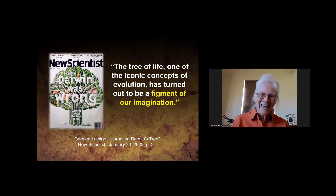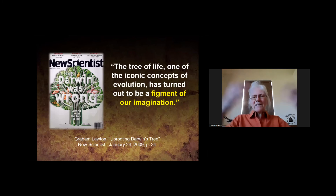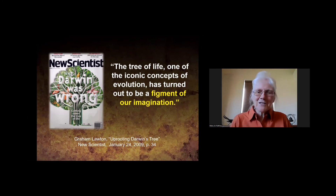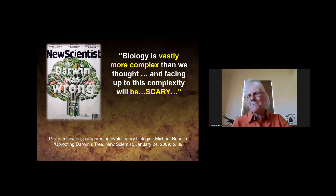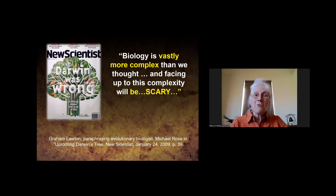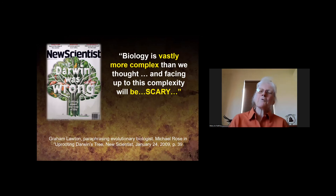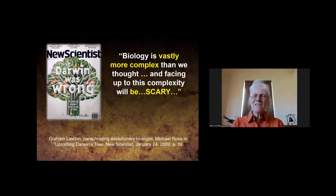New Scientist stated: 'For a long time the holy grail was to build a tree of life. Today the project lies in tatters, torn to pieces by an onslaught of negative evidence. The tree of life, one of the iconic concepts of evolution, has turned out to be a figment of our imagination.' They added: 'We have no evidence at all that the tree of life is a reality. Biology is vastly more complex than we thought, and facing up to this complexity will be scary.' As a creationist, I don't find that scary — the more we learn in genetics, the more it points to an intelligent designer.